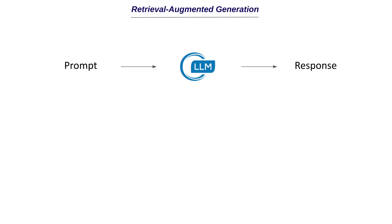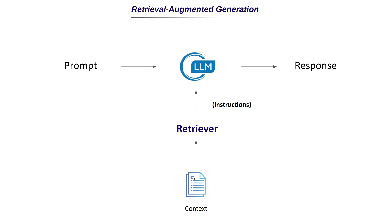That's where RAG comes into play. Let's say we have a prompt and we know the LLM may not have an answer because it's a more specific question. It could also be a situation where you have a custom document — like a legal document for your company — that the LLM doesn't have access to. If it's a 100-page document and you don't have time to go through it, you'd use the LLM to answer questions from it, but we know there are limitations with the original LLMs in this case.